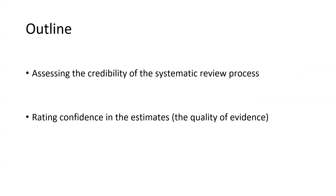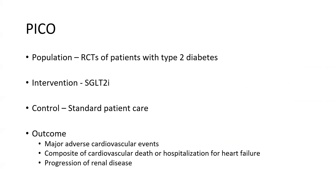When we want to critically appraise a systematic review or a meta-analysis, we usually do it under two major headings: assessing the credibility of the process and rating the confidence in the estimates. Then we see how this can be applied to our patient. The PICO question: the population was RCTs of patients with type 2 diabetes, the intervention was an SGLT2 inhibitor, the control was standard patient care, and the outcomes were major adverse cardiovascular events, a composite of cardiovascular death or hospitalization for heart failure, and the progression of renal disease.